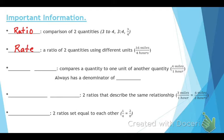A unit rate compares a quantity to one unit of another quantity — for example, four miles per one hour. A unit rate always has to have a denominator of one.